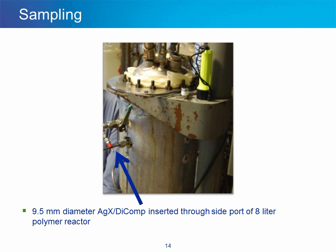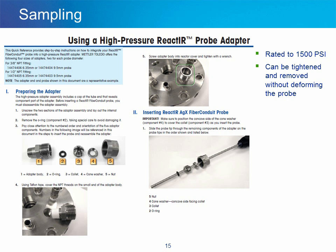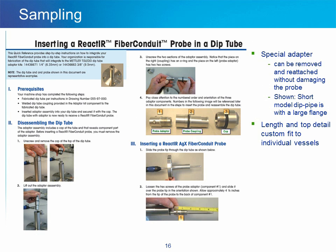This is an example of a 9.5 millimeter diameter silver halide diamond probe inserted through a side port of an 8 liter polymer reactor, using a high-pressure React-IR probe adapter. This adapter is rated to 1500 psi and is designed so that it can be tightened and removed as many times as desired without deforming the probe body. For this reason, we recommend this adapter as opposed to a conventional compression fitting. In order to secure a silver halide probe in a dip pipe, a special adapter is used that can also be removed and reattached without damaging the probe's metal wall. A short model dip pipe is shown with a large flange, and in practice the length and detail at the top of the dip pipe will be custom designed to fit individual vessels.